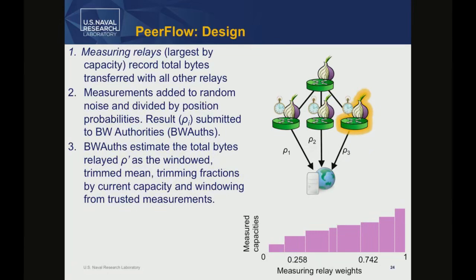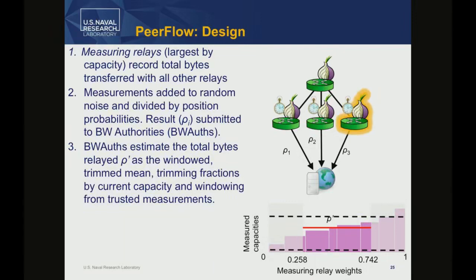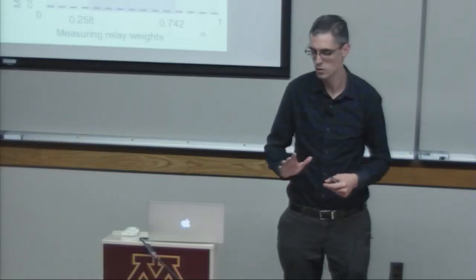The bandwidth authorities collect estimates from multiple measuring relays about what a given relay sent across the entire network. Two mechanisms cut out adversaries trying to manipulate results. First, we trim the higher and lower fractions of estimates, weighted by current capacity — so a relay with 10% of network weight gets 10% of the vote, making small adversaries likely to be trimmed if they try to manipulate results. Second, we apply a floor and ceiling based on a set of trusted relays — as EigenSpeed had — to limit a feedback process that could otherwise grow without bound.